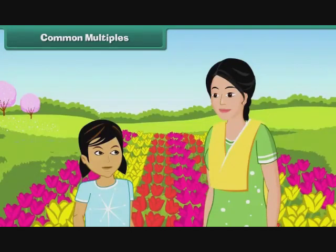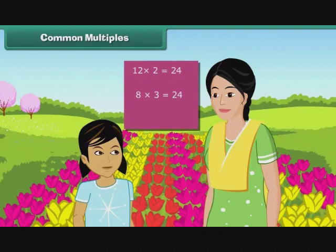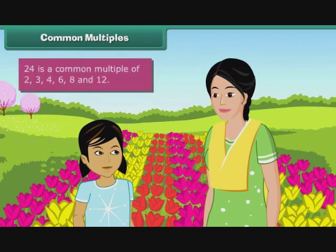Prerina and her mother are at the Rose Garden. Prerina notices that 24 is a common multiple of 2, 3, 4, 6, 8 and 12.